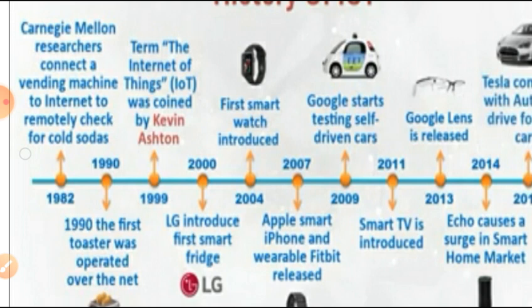Here is the diagram of the history of IoT. In year 1982, Carnegie Mellon researchers connected a vending machine to the internet remotely to check for cold soda. In 1990, the first toaster was operated over a network. In 1999, the term Internet of Things was coined by Kevin Ashton. In 2000, LG introduced the first smart fridge. In 2004, the first smartwatch was introduced.